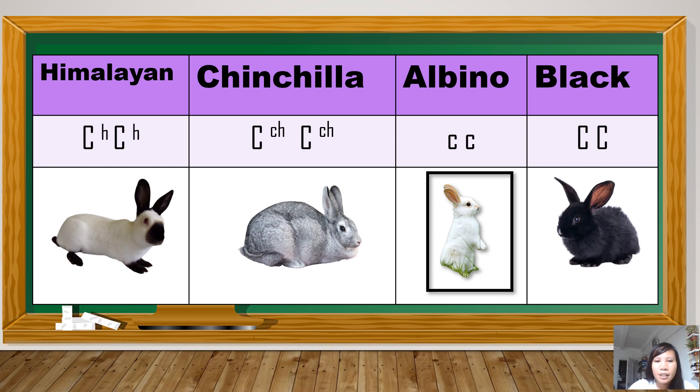And then for Chinchilla, the grayish rabbit, capital C raised to CH. CH for Chinchilla because it starts with letter C and H. And for the albino, you have small letter c and small letter c, both small letter c. Albino, the rabbit with white coat color, all white.